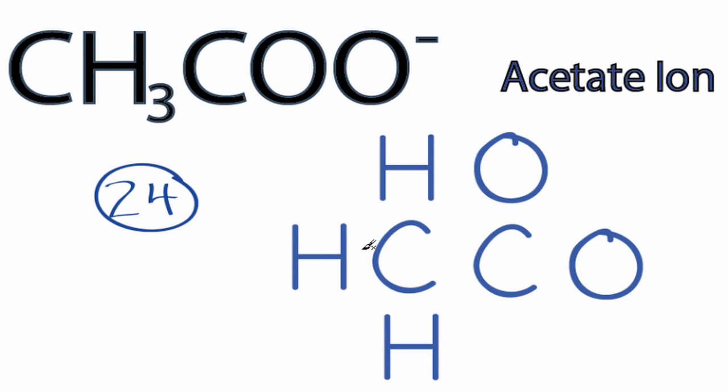We have 24 valence electrons for the CH3COO- Lewis structure. We'll put two between atoms to form chemical bonds. We've used 12 valence electrons.